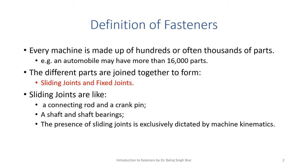This necessitates that the different parts are joined together to form different types of joints like sliding joints and fixed joints. Sliding joints are like a connecting rod and a crank pin, a shaft and shaft bearings. The presence of sliding joints is exclusively dictated by machine kinematics and is more a topic from theory of machines.